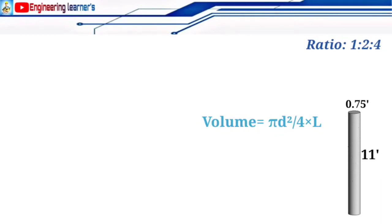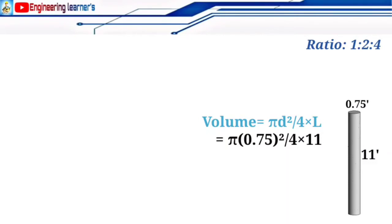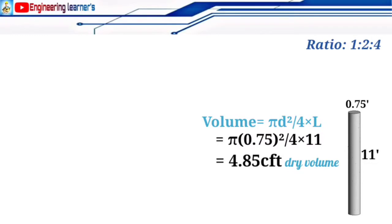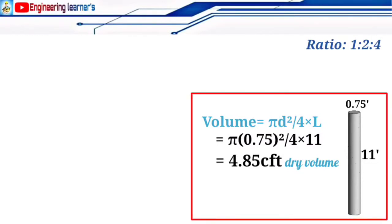Now we can find the volume. Volume = πd²/4 × length = π × (0.75)² / 4 × 11 feet. Doing the calculation, we get 4.85 cubic feet (CFT). This 4.85 CFT is the dry volume of the given column.